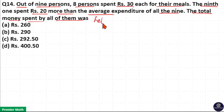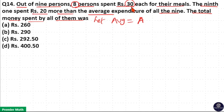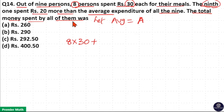Let us consider the average expenditure of all the 9 people as A. Then 8 people spent Rs. 30 each for their meal. Total money spent by 8 people is 8 into 30. Plus the 9th one spent Rs. 20 more than the average, so the 9th one spent Rs. A plus Rs. 20.